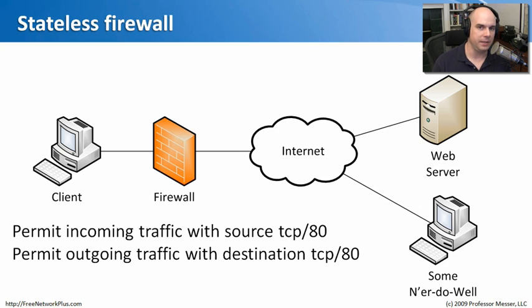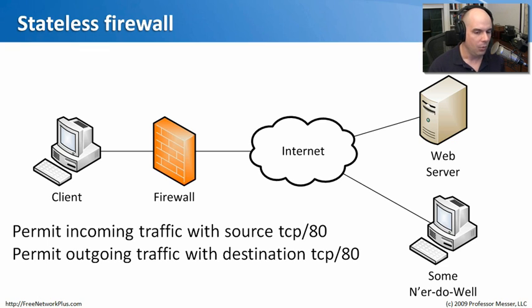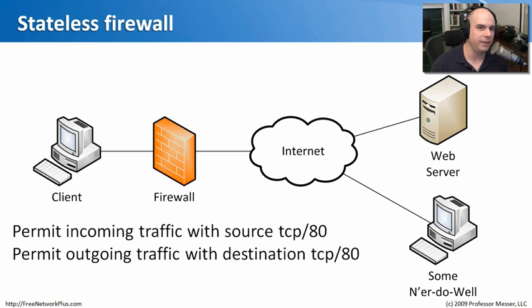Let's start with the concept of stateful and stateless — it comes up very often when you hear firewalls described. A stateless firewall allows traffic coming in one direction and traffic going in another direction, but it doesn't keep track of the state of these flows. We're setting up policies for incoming and outgoing traffic, regardless of whether that traffic is involved in a conversation.